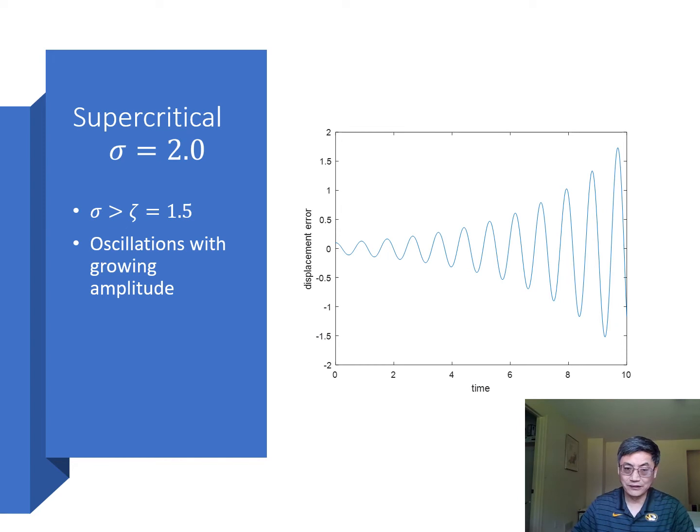For feedback gain above the damping ratio ζ, what we see is oscillation with a growing amplitude. This is the transition as the equilibrium changes from stable into oscillations with growing amplitude. This is a typical Hopf phenomenon.